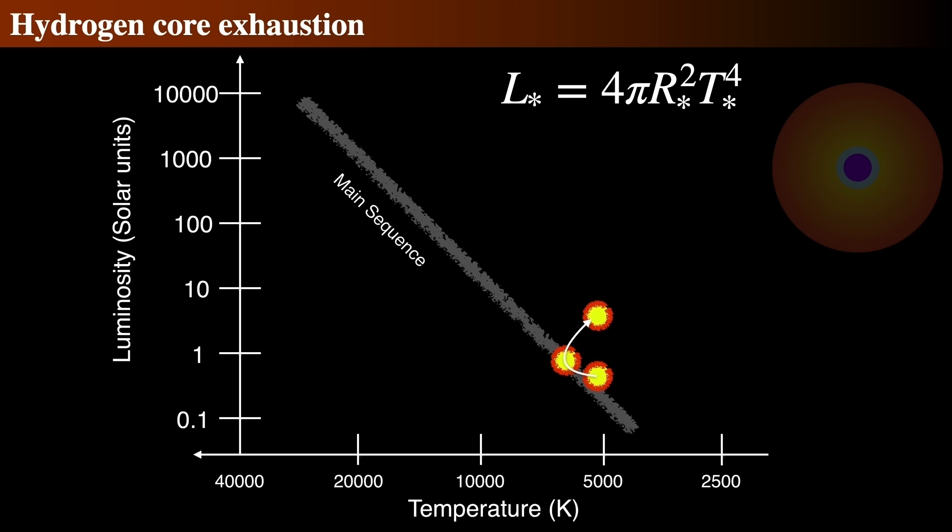At the surface of the star, the temperature will drop to about 5,500 Kelvin, and the size will grow to about 1.6 times the radius of the Sun, and the luminosity will increase to about 2.25 times the luminosity of the Sun. These three parameters are interrelated via the Stefan-Boltzmann law applied to stars.